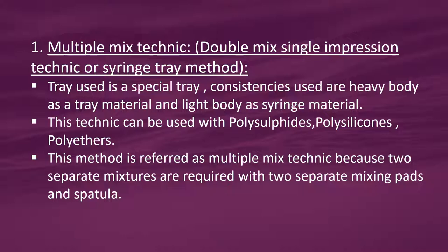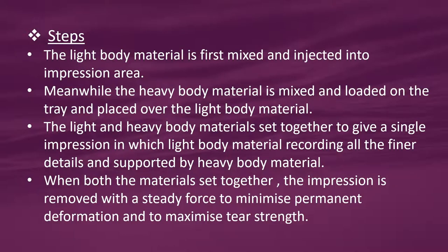Consistencies used are heavy body as a tray material and light body as syringe material. This technique can be used with polysulphides, polysilicones, and polyethers. It is referred to as the multiple mix technique because two separate mixtures are required with two separate mixing pads and spatulas. The light body material is first mixed and injected into the impression area. Meanwhile, the heavy body material is mixed, loaded onto the tray, and placed over the light body material. The light and heavy body materials set together to give a single impression in which the light body material records all the finer details and is supported by the heavy body material.